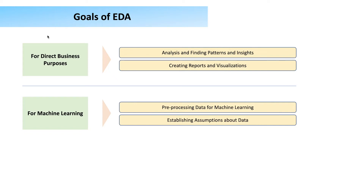The second purpose of EDA is as a pre-processing step before machine learning. For example, data received for building a movie recommendation system may be full of anomalous, incorrect, or incomplete data not suitable for feeding into a machine learning algorithm. In that case, an EDA process must take place to understand, transform, and clean the data and make it fit for ingestion into a machine learning algorithm for creating the recommendation system.